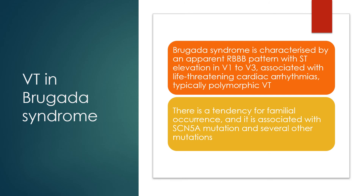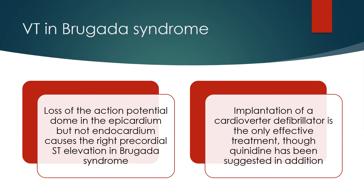Brugada syndrome is characterized by an apparent RBBB pattern with ST elevation in V1 to V3, associated with life-threatening cardiac arrhythmias, typically polymorphic VT. There is a tendency for familial occurrence and it is associated with SCN5A mutation and several other mutations. Loss of the action potential dome in the epicardium but not endocardium causes the right precordial ST elevation in Brugada syndrome. Implantation of a cardioverter-defibrillator is the only effective treatment, though quinidine has been suggested in addition.